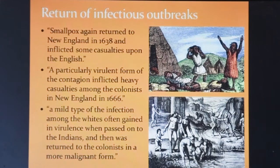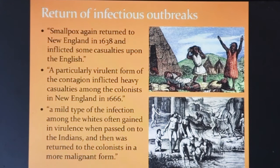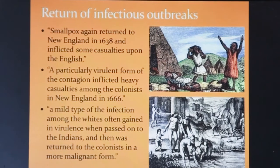In the years that followed the 1634 outbreak, smallpox returned to New England in 1638, and a particularly virulent form of the contagion inflicted heavy casualties among the colonists in 1666. When mild types of infection were passed on to the Indians and then returned to the colonists, it came back as a more malignant form.